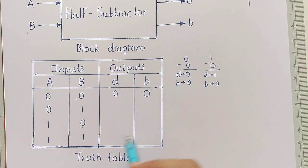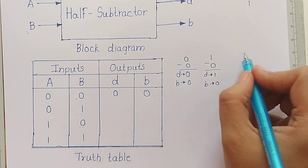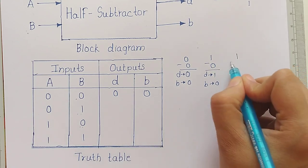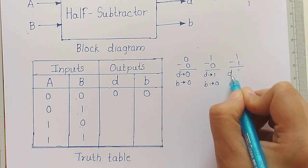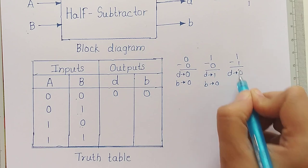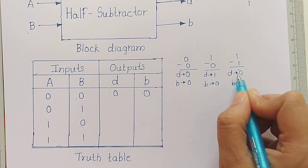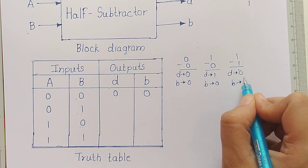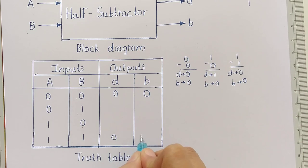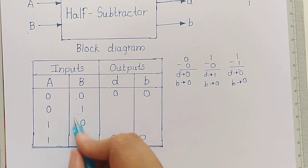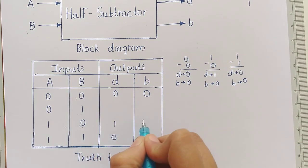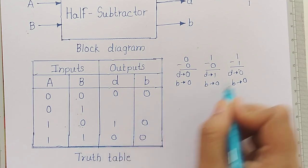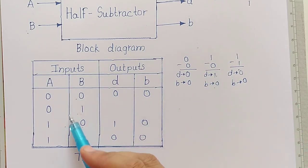Fourth case: 1 minus 1 — the difference is 0 and no borrow is taken, so D=0 and B=0. For the case 1 and 0 (i.e., A=1, B=0): difference is 1 and borrow is 0.